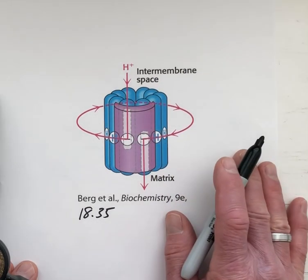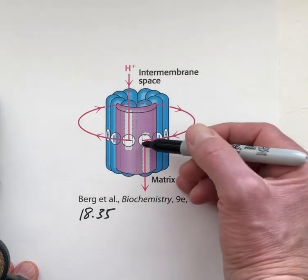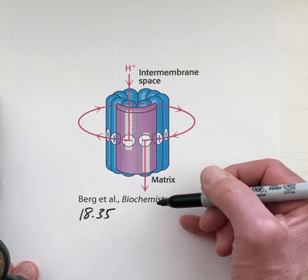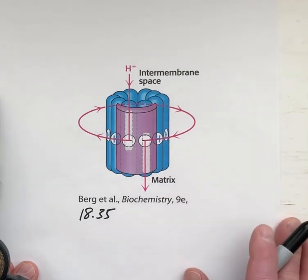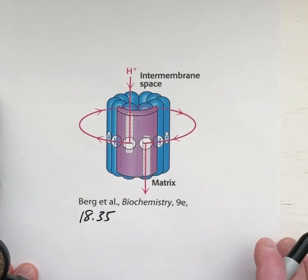That requirement for rotation to get from one of these half channels to the other is what is driving the rotation of the C ring and also the rotation of the gamma subunit, which then drives the transition from L to T to O in the catalytic subunits, the beta subunits.